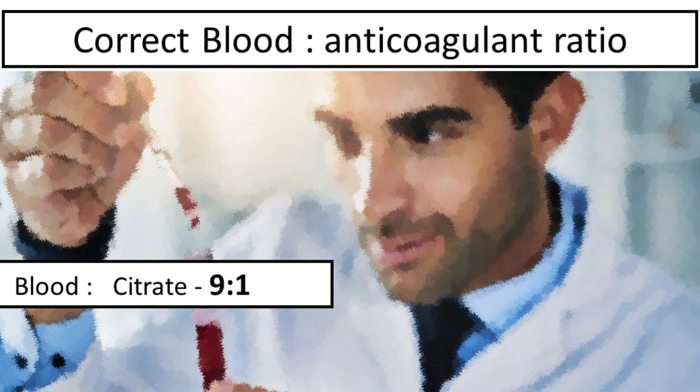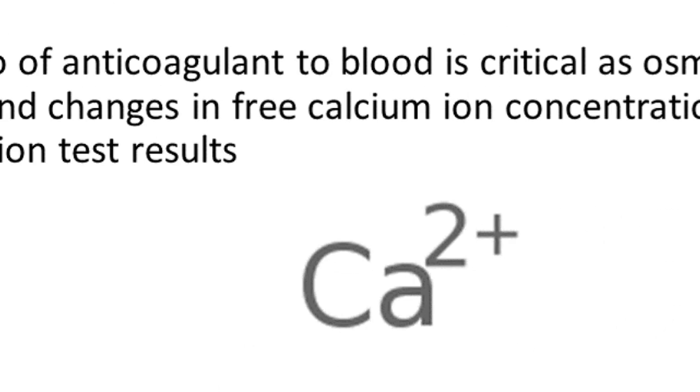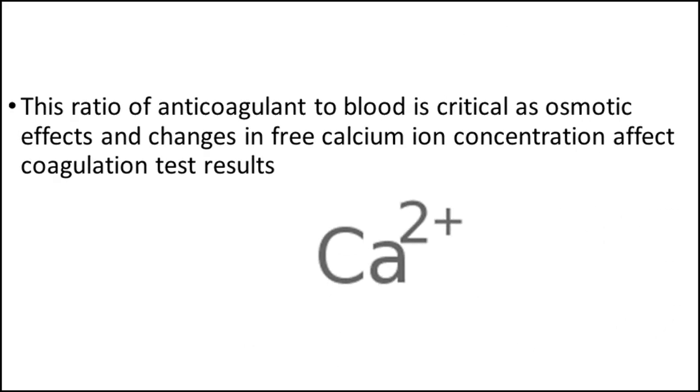For routine blood coagulation testing, 9 volumes of blood are added to 1 volume of anticoagulant. This ratio of anticoagulant to blood is critical as osmotic effects and changes in free calcium ion concentration affect coagulation test results.